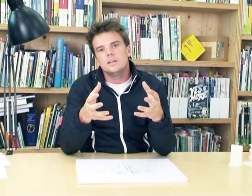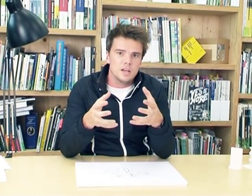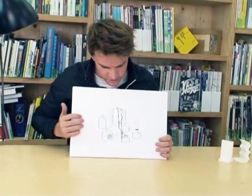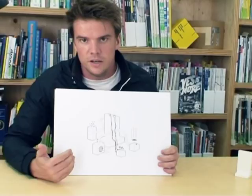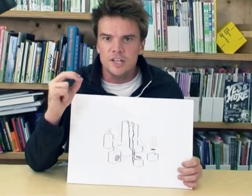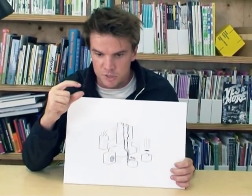Bernard Rudofsky referred to this kind of architecture as vernacular architecture, or architecture without architects. But then came the modern architect and the building engineer and replaced the empirical tradition with analysis and technology. Essentially what the building engineer did was to analyze which qualities a building needs to provide, and for each quality he would design a specific machine.